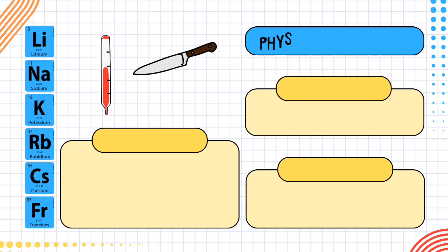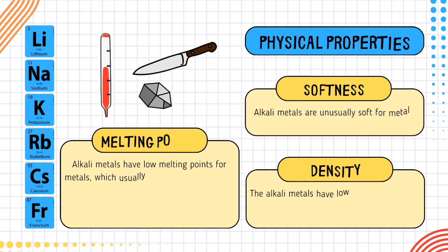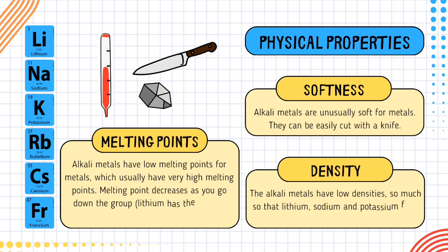Now we will learn about the properties of the alkali metals. Melting point: alkali metals have low melting points for metals, which usually have high melting points. Melting point decreases as you go down the group. Softness: alkali metals are usually soft for metals and can be easily cut with a knife. Density: alkali metals have low density, so much so that lithium, sodium, and potassium float on water.